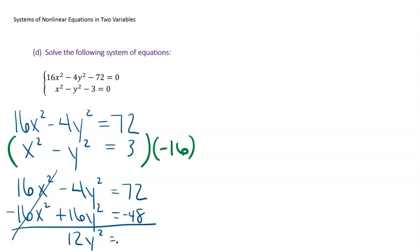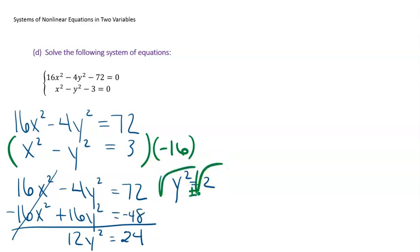So: 16x² − 4y² = 72 (first equation unchanged). Second equation times −16 gives: −16x² + 16y² = −48. Adding down, the x squareds cancel. We get −4y² + 16y² = 12y², and 72 − 48 = 24. So 12y² = 24. Dividing both sides by 12 gives y² = 2. Taking the square root of both sides — with plus or minus — gives y = ±√2.